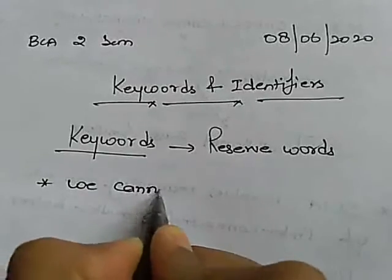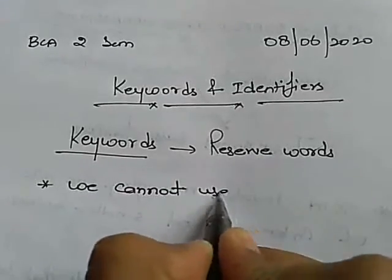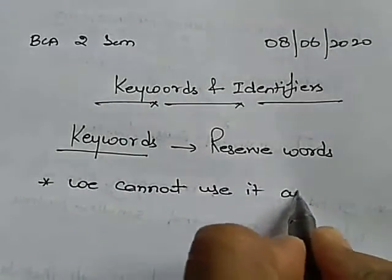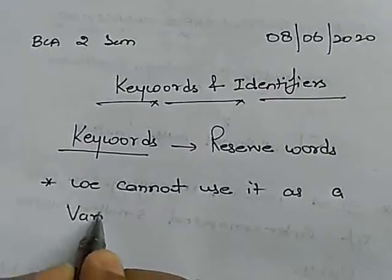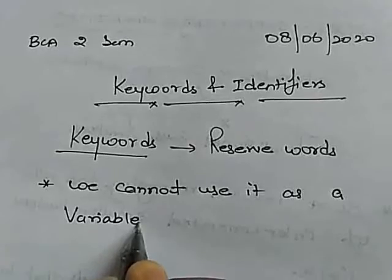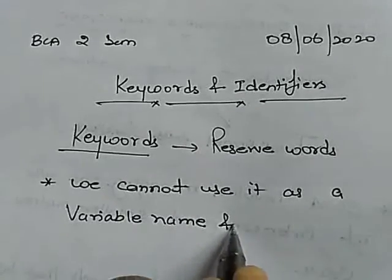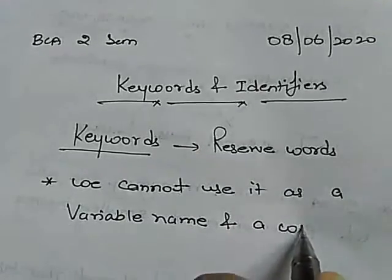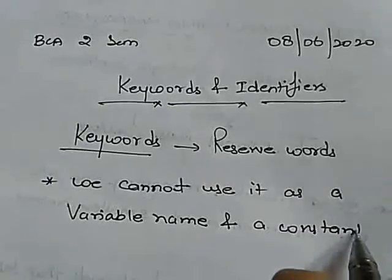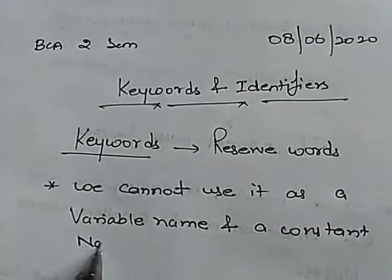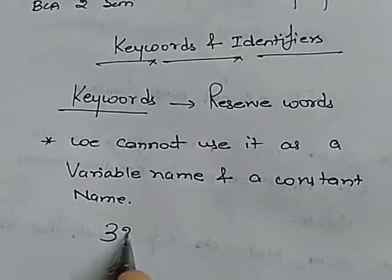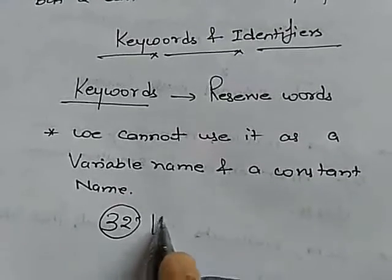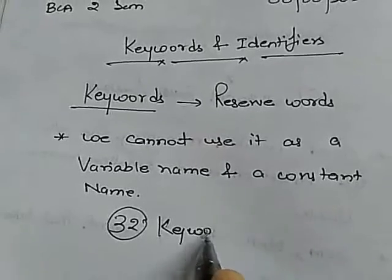We cannot use it as a variable name and a constant name. In C language, we have 32 keywords.